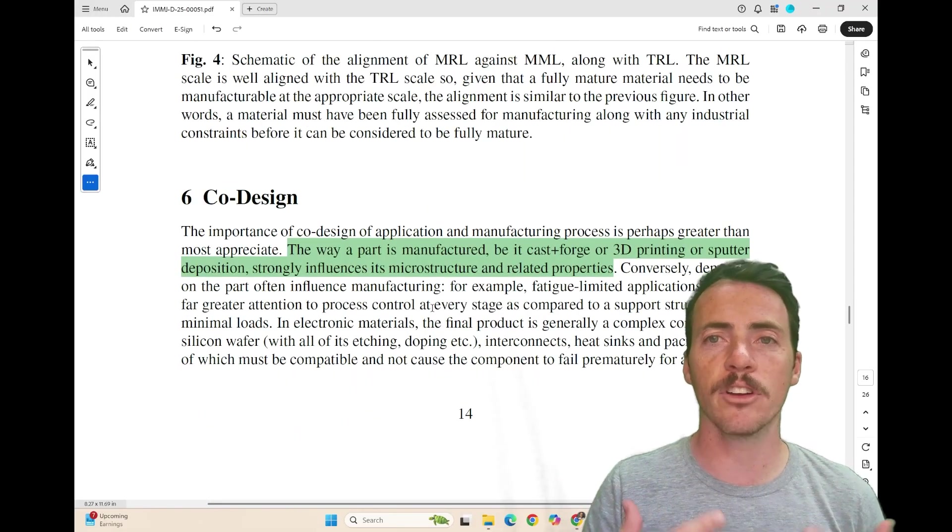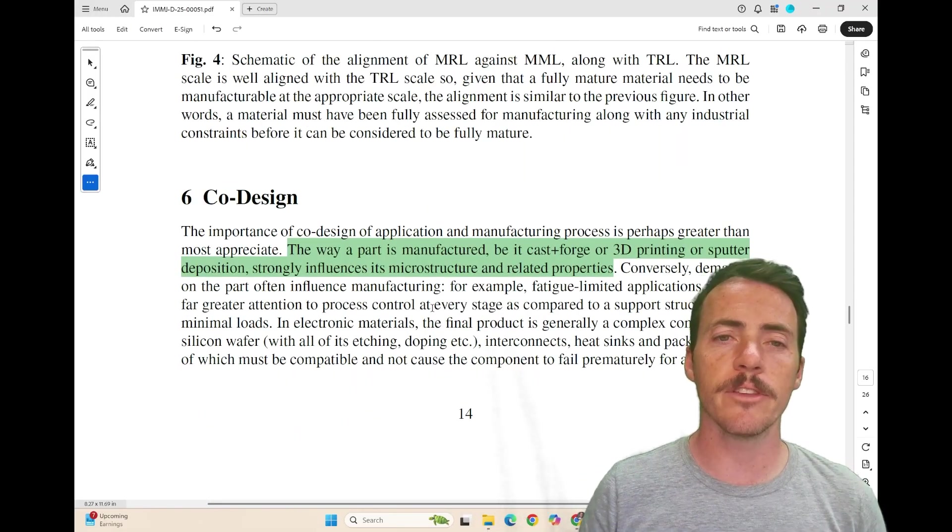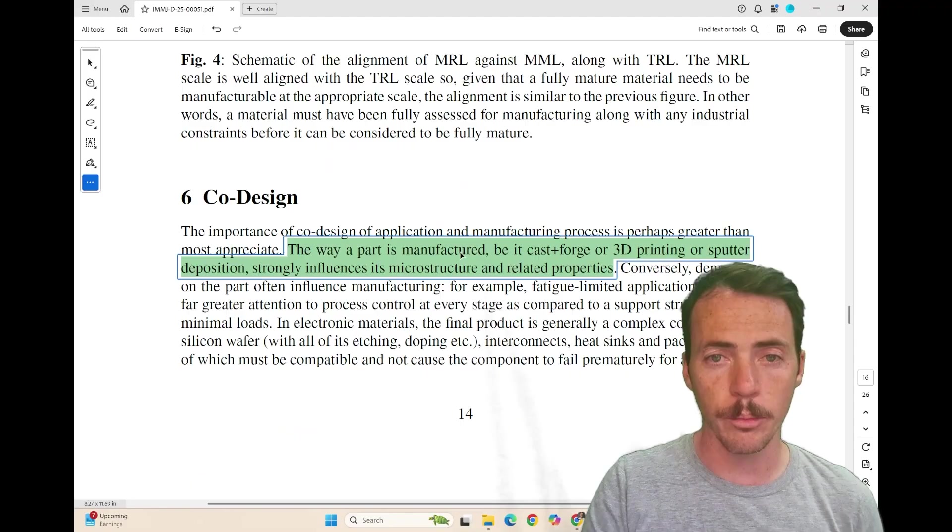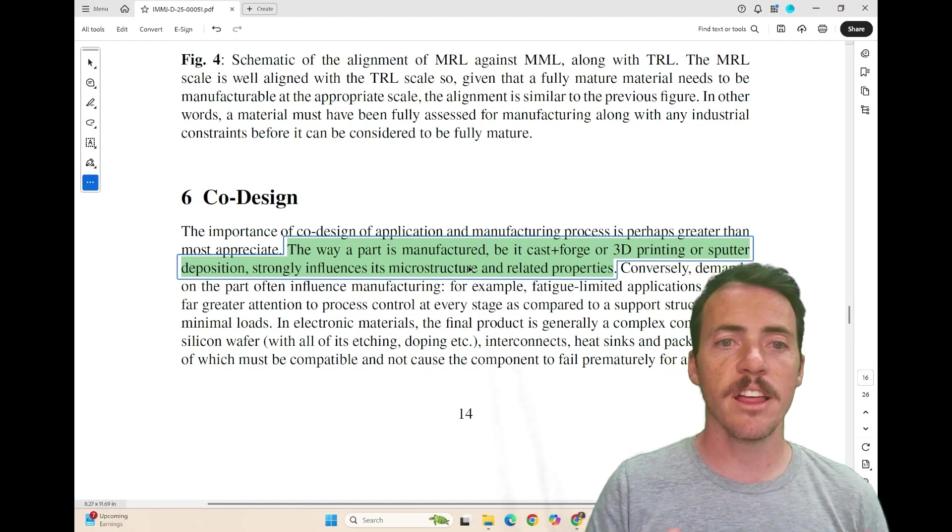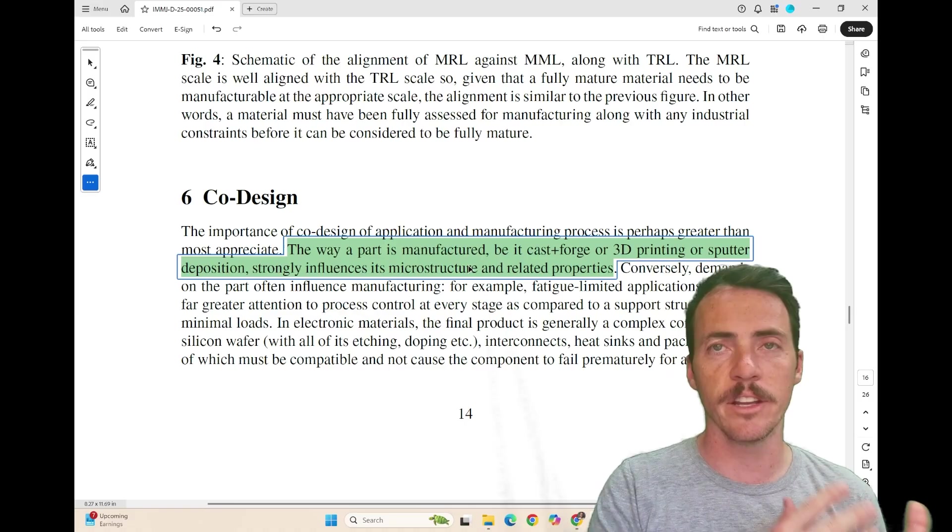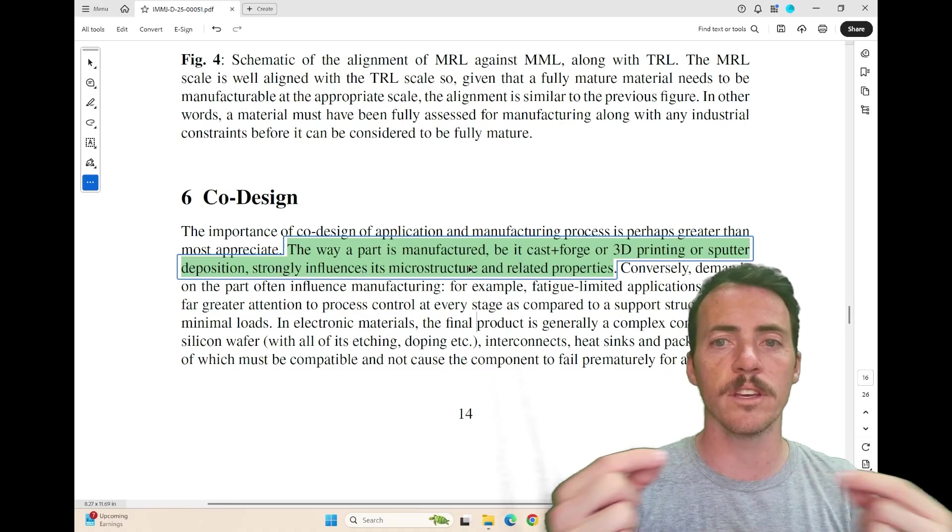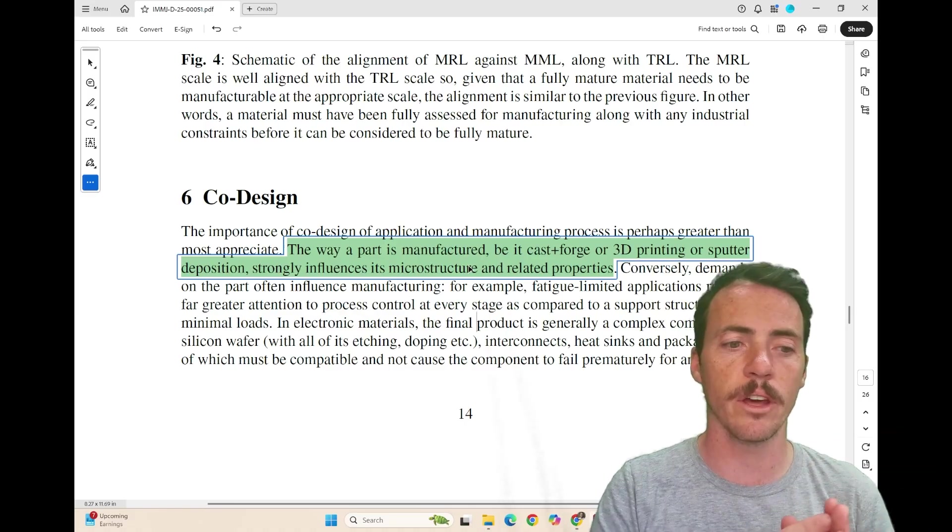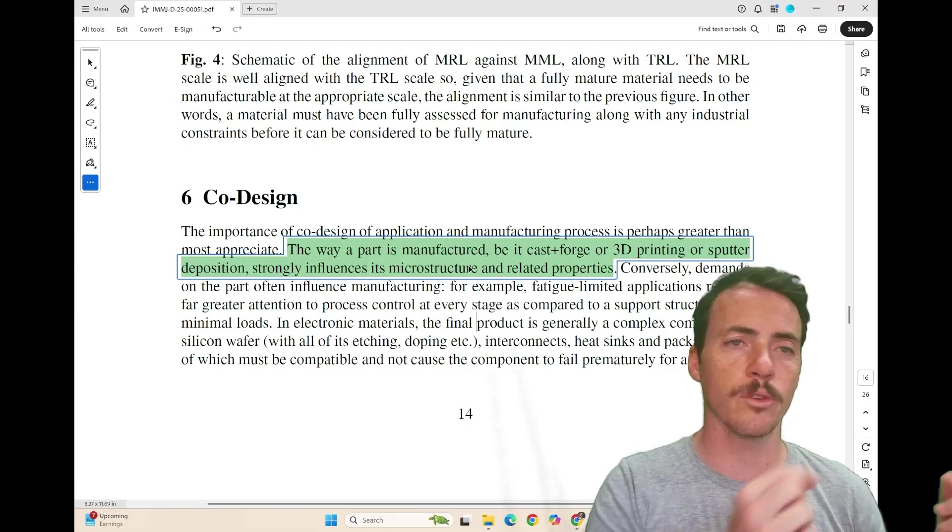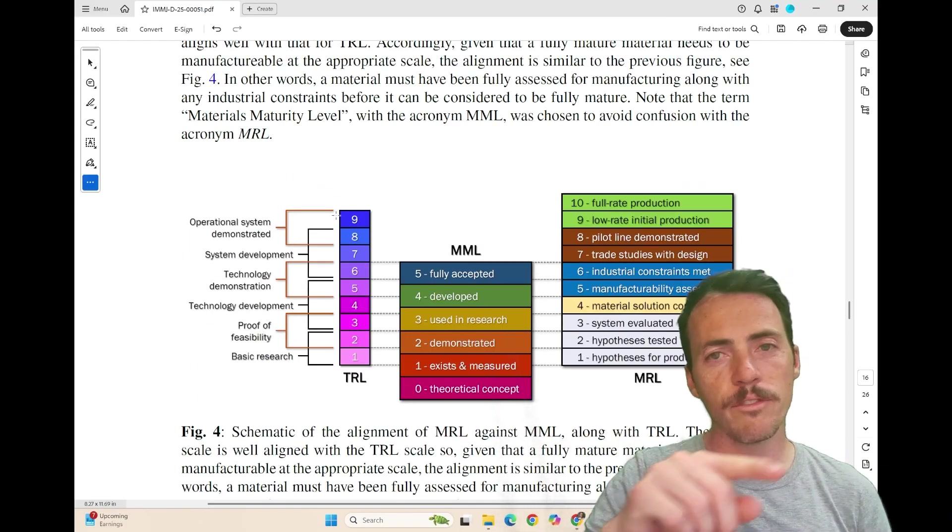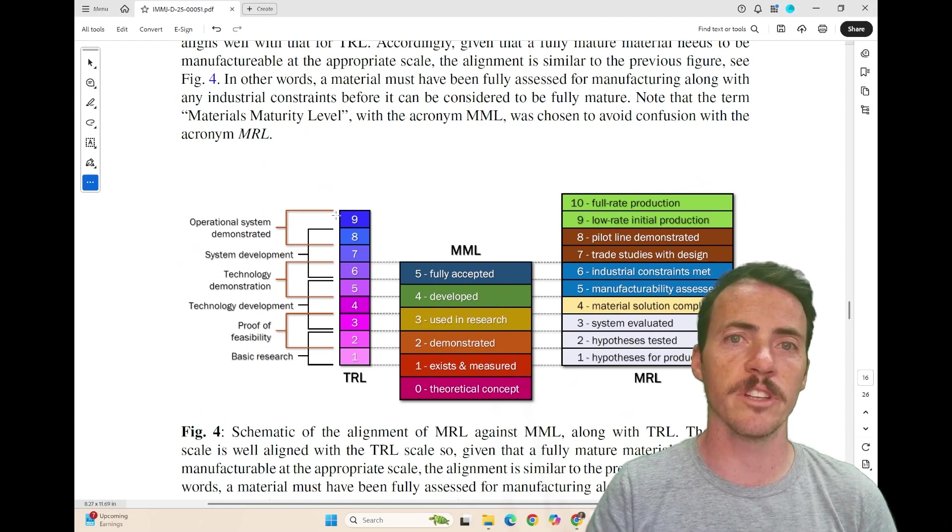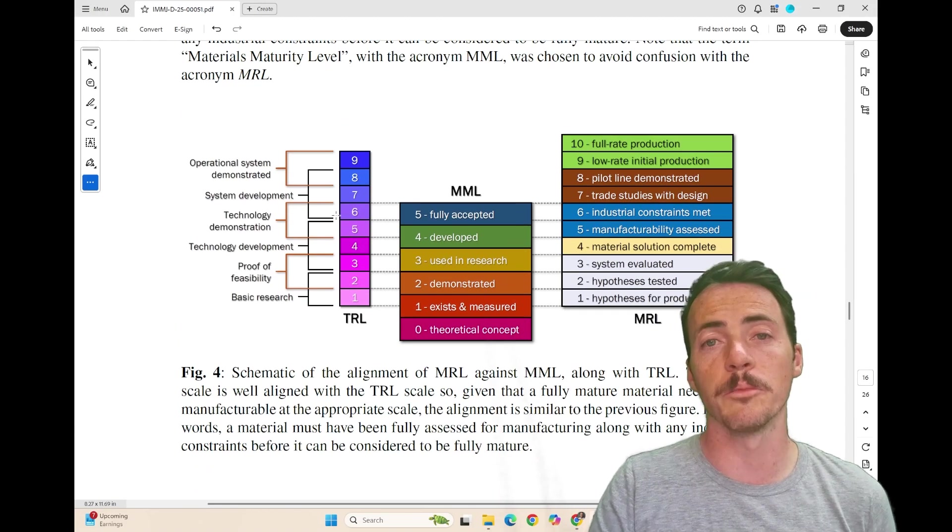And then they have a lot of cool things to say about co-design. Because obviously the way that you actually manufacture a part, as they point out here, whether it's casting, forging, 3D printing, sputtering, whatever it is, that's going to influence the microstructure and its properties. So it's a bit of a chicken and egg that you have to solve these things together and not just one versus the other. So it moves the design process from the linear process, which we see with the TRLs to a more evolving co-design process, which is going to be inevitable in materials maturity levels.